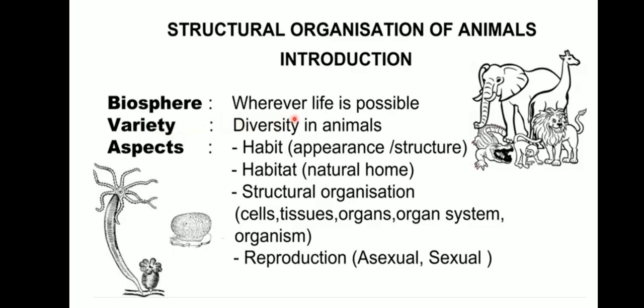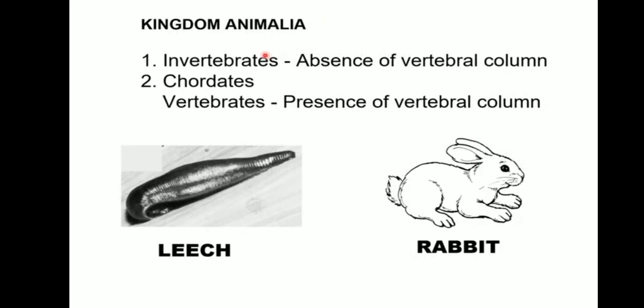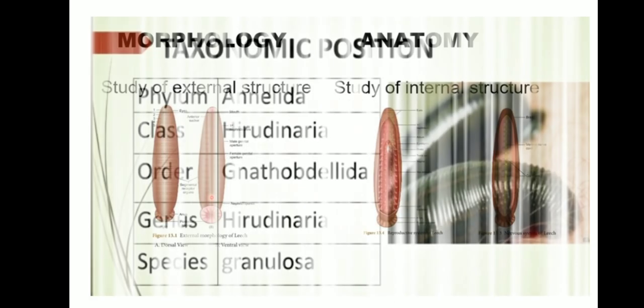In this world there are varieties of organisms. In this lesson we will see about two kinds specially. Kingdom Animalia is divided into two groups: invertebrate and vertebrate. Invertebrates are organisms which don't have a vertebral column, and vertebrates are organisms which have a vertebral column. Under invertebrate we are going to see about leech, and under vertebrate we are going to see about rabbit. In today's class I will explain about the leech.